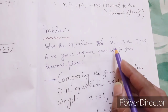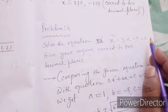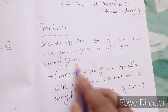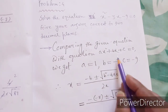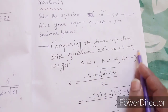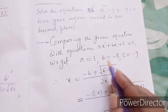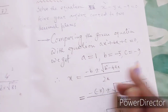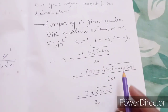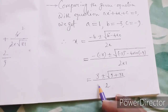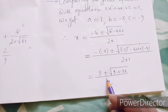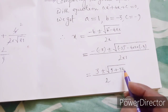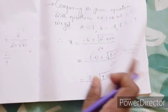Now solve problem 4: x² - 3x - 9 = 0, correct to two decimal places. Comparing with ax² + bx + c = 0, we get a = 1, b = -3, c = -9. Substituting into the quadratic formula, we find x = (3 ± √45) / 2.